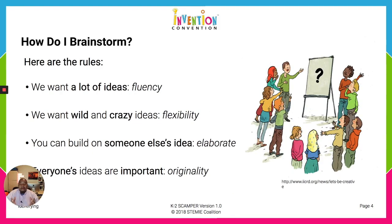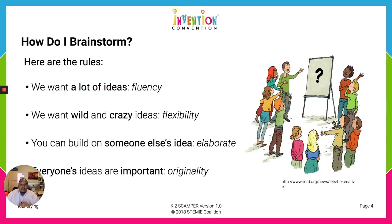So you may be asking yourself: how do I brainstorm? Well, here we have a couple of rules you may want to follow. First of all, we want a lot of ideas. No idea is too wild or too crazy — in fact, we want wild and crazy ideas, because this gives us some flexibility when we move forward in the invention process.